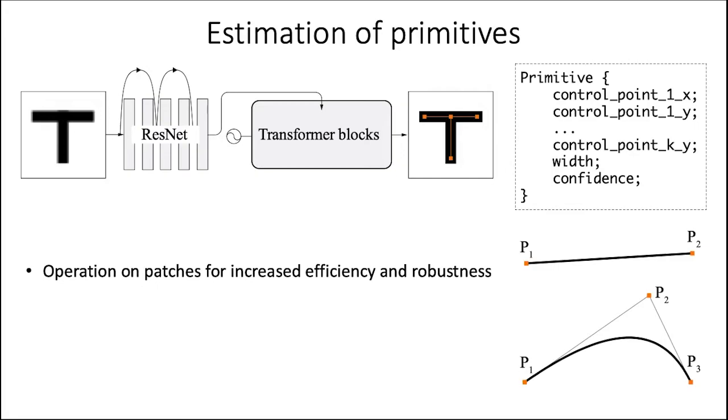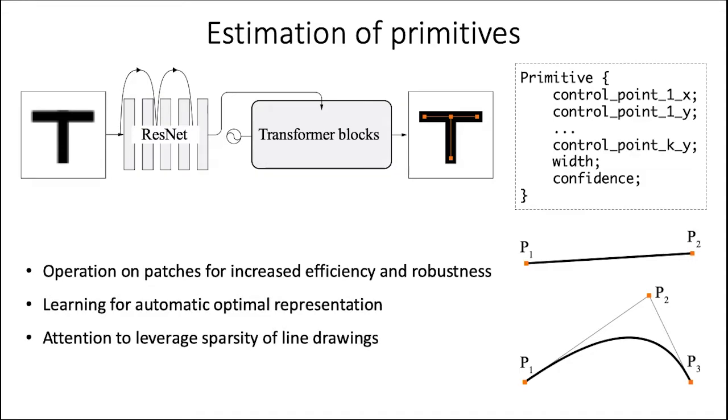We fix the maximum number of primitives per patch, and along with the parameters of the primitive, estimate its confidence, which indicates whether the primitive should be kept or discarded. The use of a trainable neural network allows us to automatically get the optimal vector representation in each individual case, and the use of the transformer architecture, with its attention specifically, allows us to leverage the sparsity of line drawings.